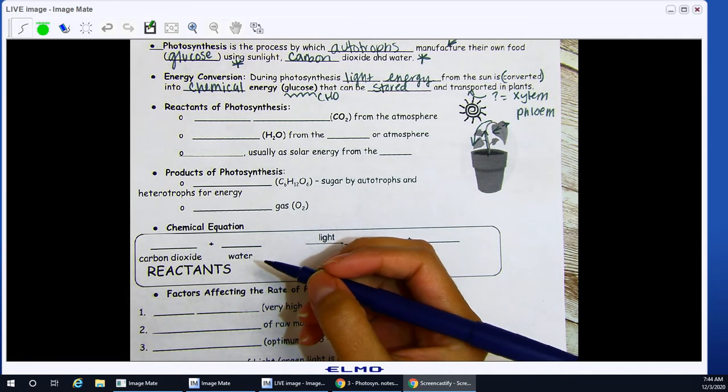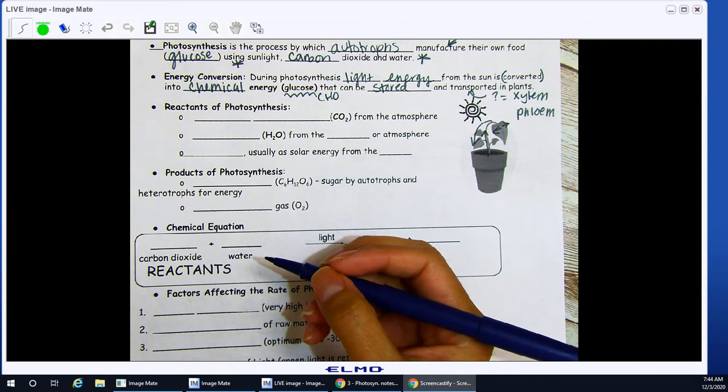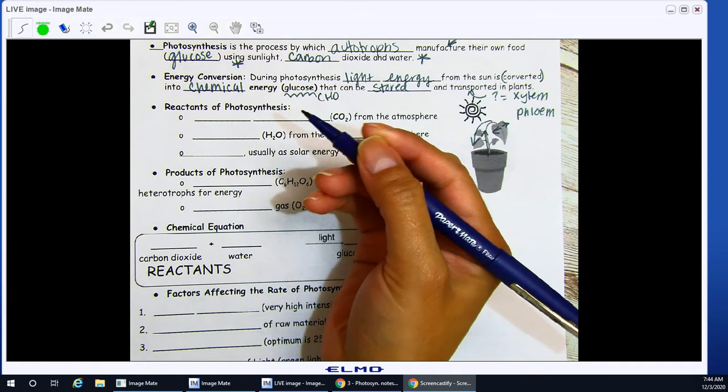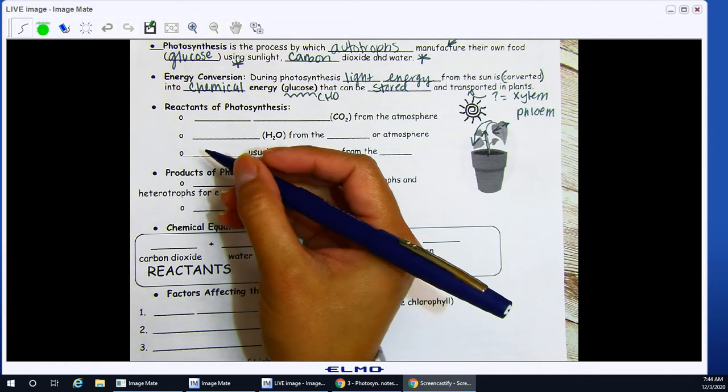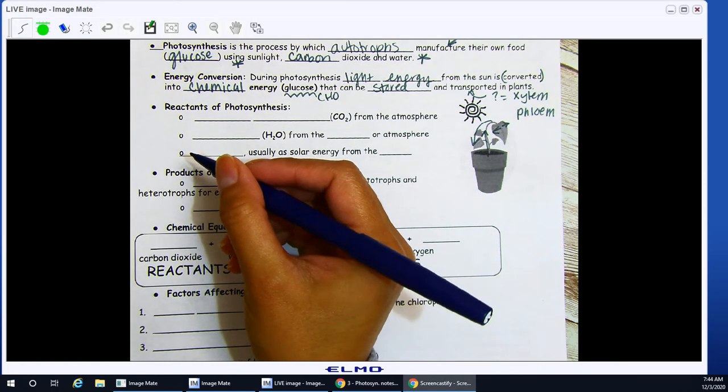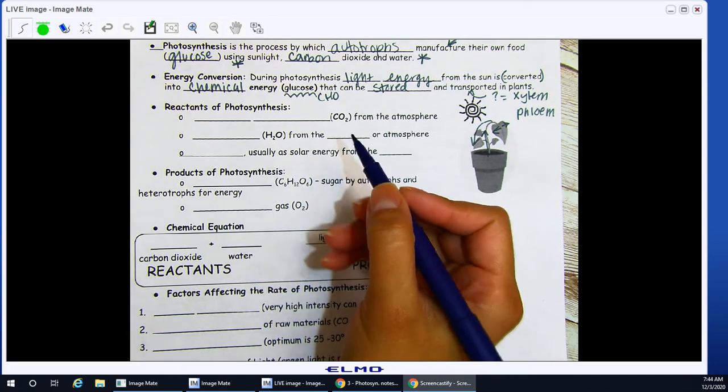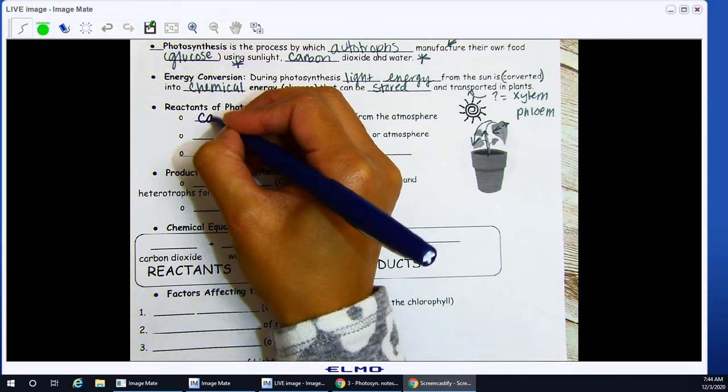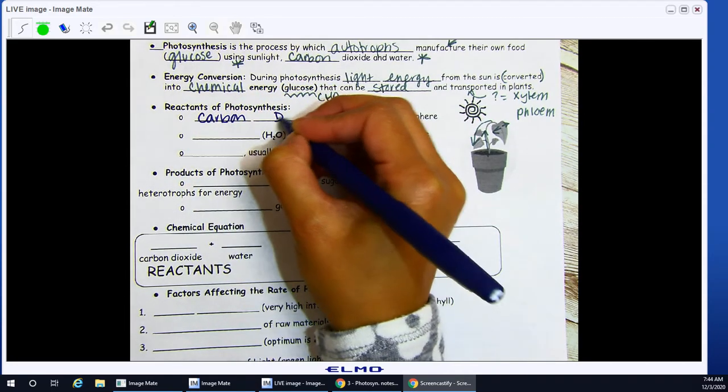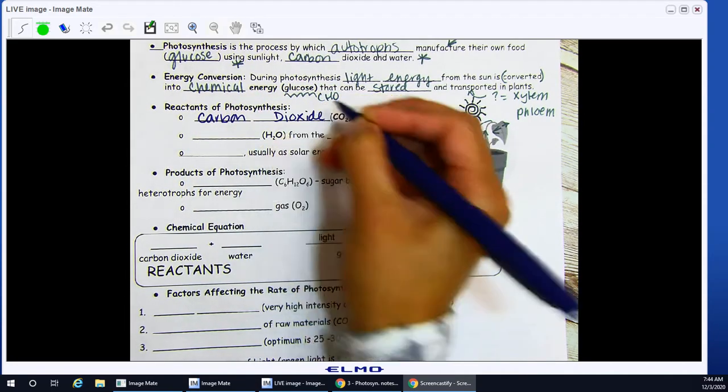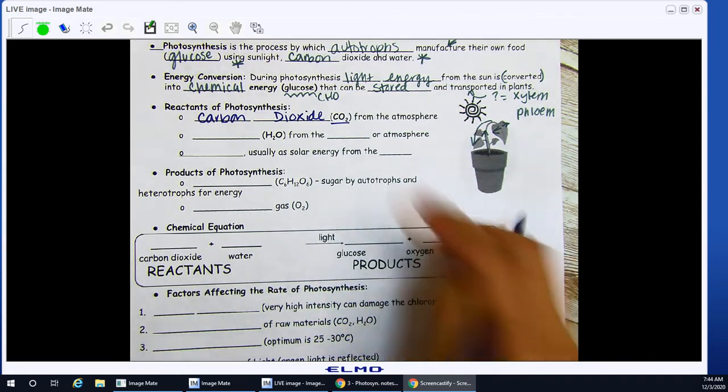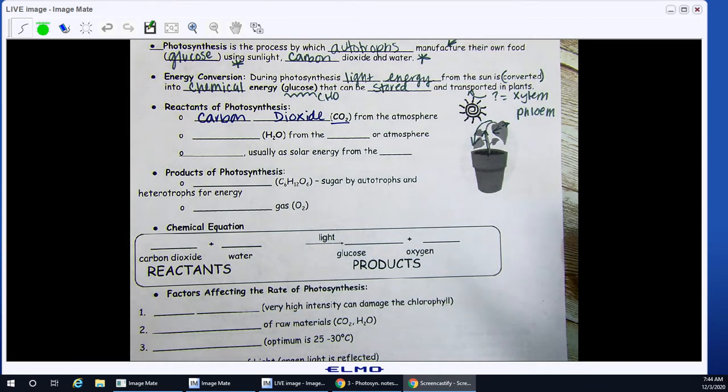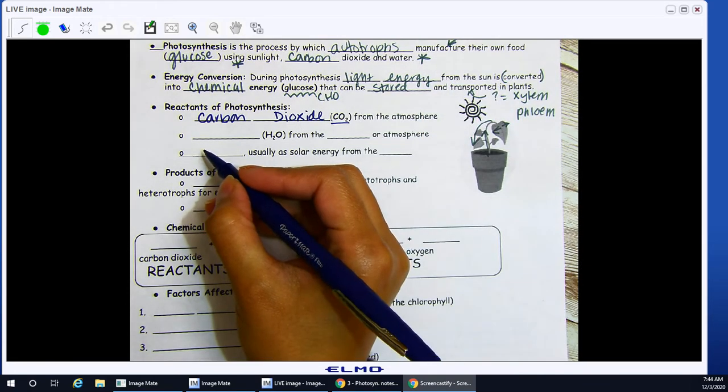Reactants of photosynthesis. So we're talking about our chemical reactions. Your reactants are what go into a reaction. So my reactants, what goes in, in order for you to do photosynthesis? This is carbon dioxide, CO2. And your plant is going to get CO2 from the atmosphere.